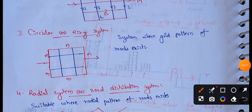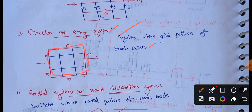Third, the circular system or ring system. This is used where a grid pattern of roads exists. The main pipe is laid peripherally, forming a ring system around the area. Laying the main pipe peripherally increases the pressure at the furthest point.